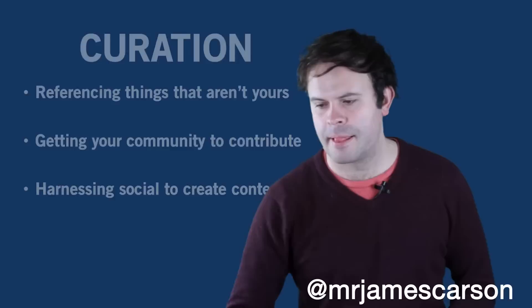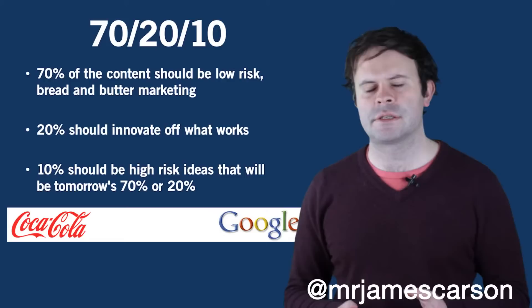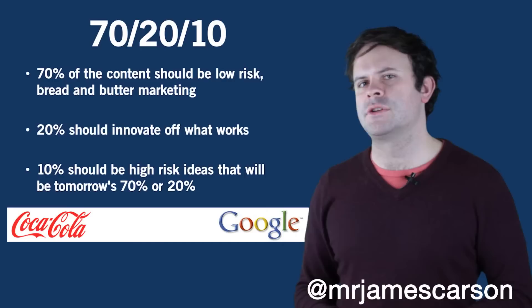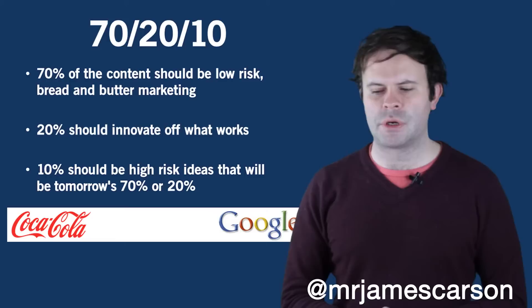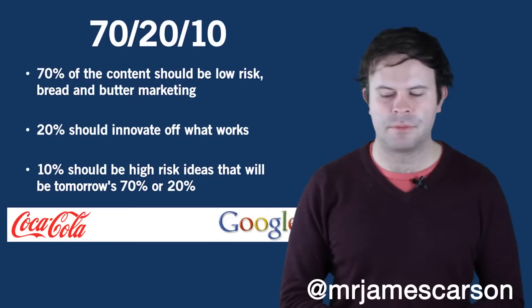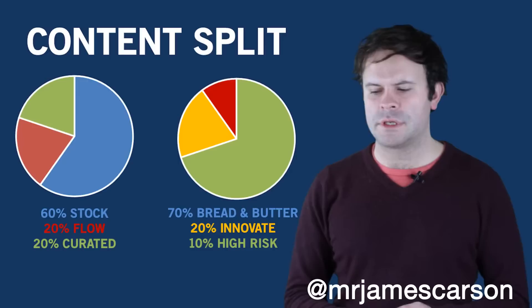On planning techniques, we need to think about a rule called 70-20-10, borrowed from Google's principle: 70% of a team member's workflow should focus on the core business, 20% should be experimental, and 10% highly experimental or high risk. In content strategy terms, 70% of content should be low-risk bread and butter marketing, 20% should innovate off what works, and 10% should be high-risk ideas that will become tomorrow's 70 or 20%. So an evergreen website might have 60% stock, 20% flow, and 20% curated content.